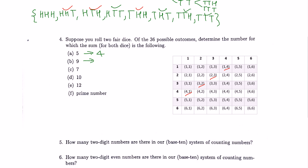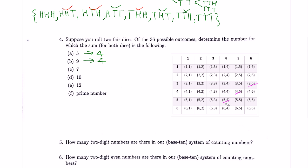Similarly, how about a sum of 9? Sum of 9: (6,3), (5,4), (4,5), (3,6). Are there any others? No — so there are 1, 2, 3, 4 ways to get a sum of 9.